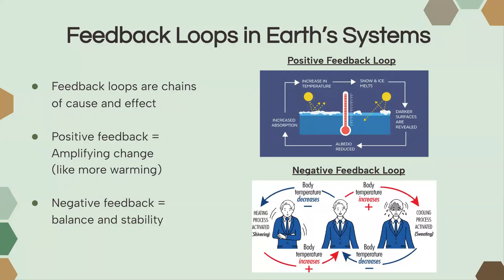So an example of a positive feedback loop: because of global warming, the temperature is increasing and this can cause snow and ice to melt. If snow and ice melts, then there are more darker surfaces on Earth and those darker surfaces absorb more light. And if the darker surfaces absorb more light, then the Earth heats up even more, causing a loop that amplifies or worsens.